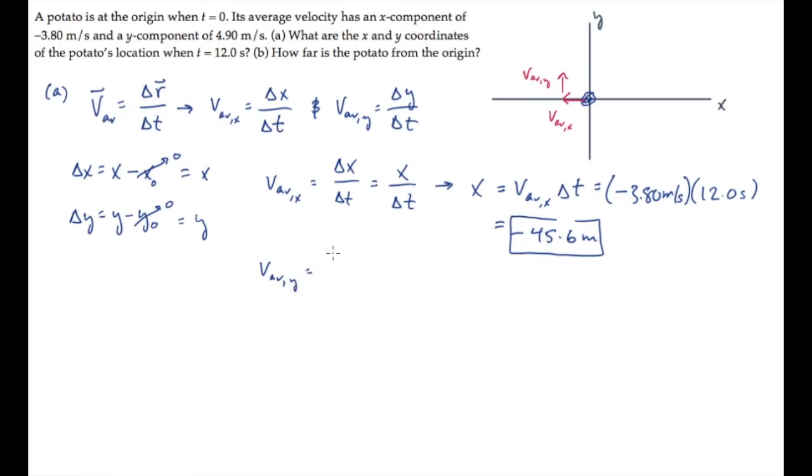Calculate the potato's final y position in exactly the same way. Use the y component of the average velocity equation. Solving for the final location y and substituting the known values. When you calculate, you find that the final y location is 58.8 meters.